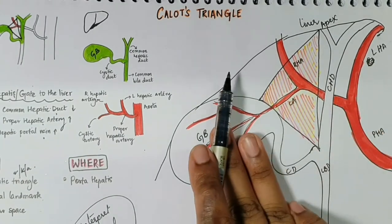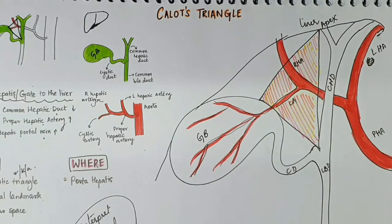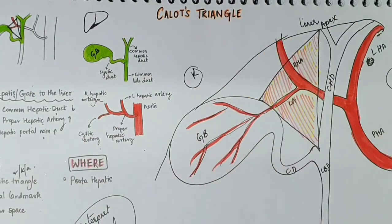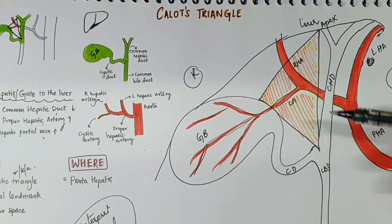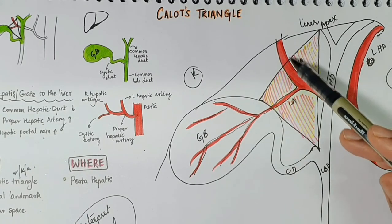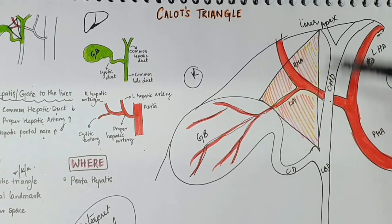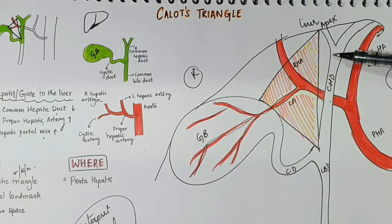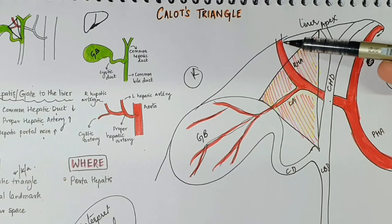The medial side runs along the common hepatic duct, and the lateral side faces the gallbladder side. The medial border is the common hepatic duct. Inferiorly, we have the cystic duct, and superiorly we have the inferior surface of the liver. So it's a triangle with its apex directed towards the liver, a medial border along the common hepatic duct, an inferior border formed by the cystic duct, and a superior border formed by the inferior surface of the liver.